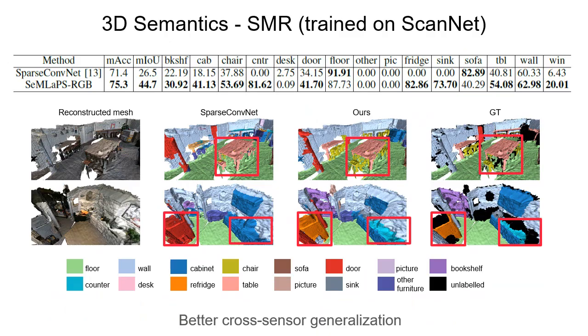In this slide, we show the cross-sensor generalization results on our self-collected SMR dataset. From the table, our system in RGB mode shows the best performance in both metrics.